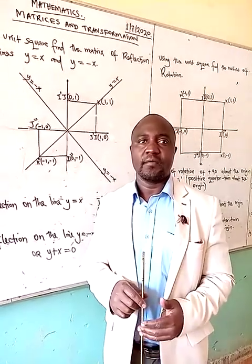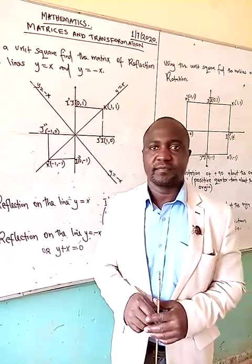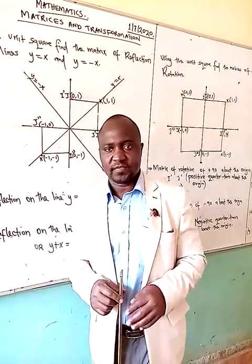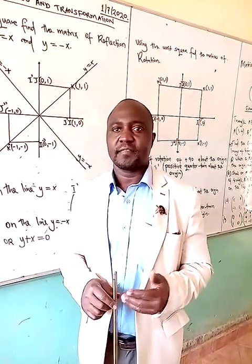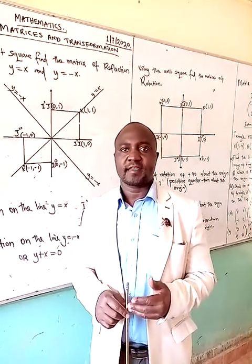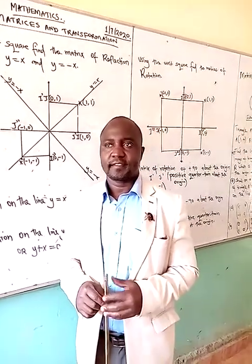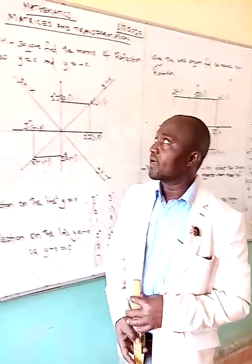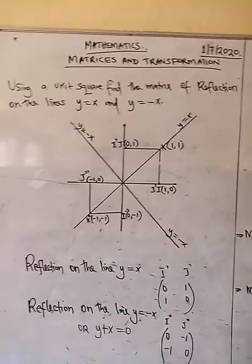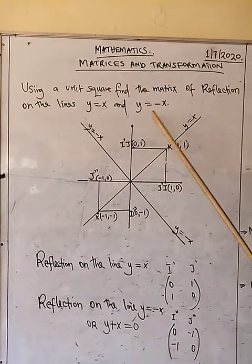We saw how we could use a unit square in finding various matrices of transformation. We are going to continue with that topic. In our previous class, we looked at reflection on the line y equals 0 (the x-axis) and reflection on the y-axis, that is the line x equals 0. Today, we are going to look at using a unit square in finding the matrix of reflection on the line y equals x and the line y equals negative x.